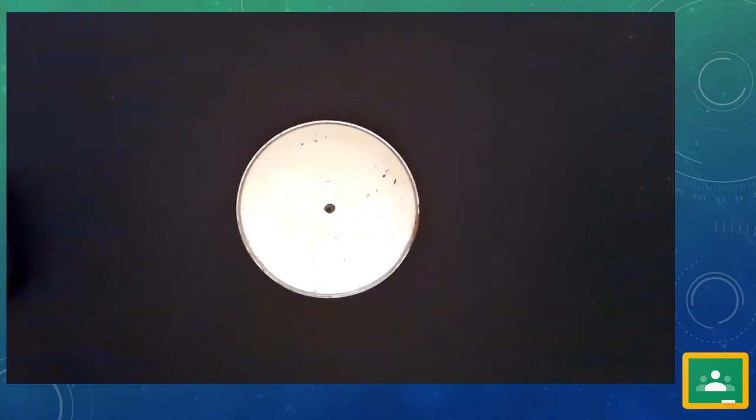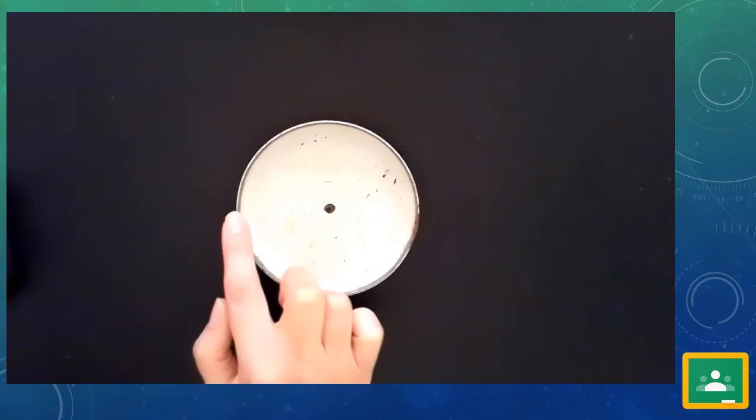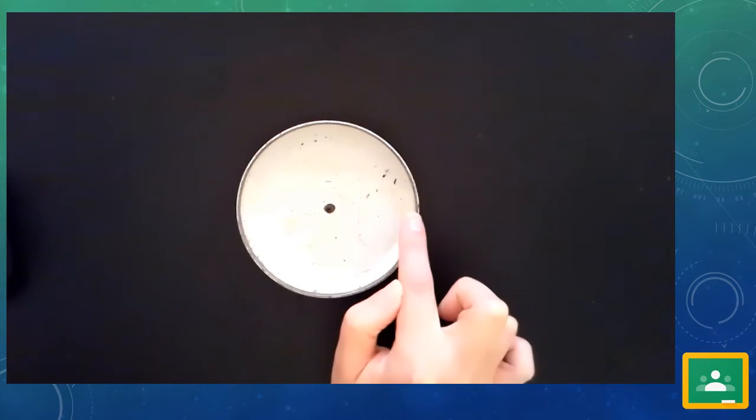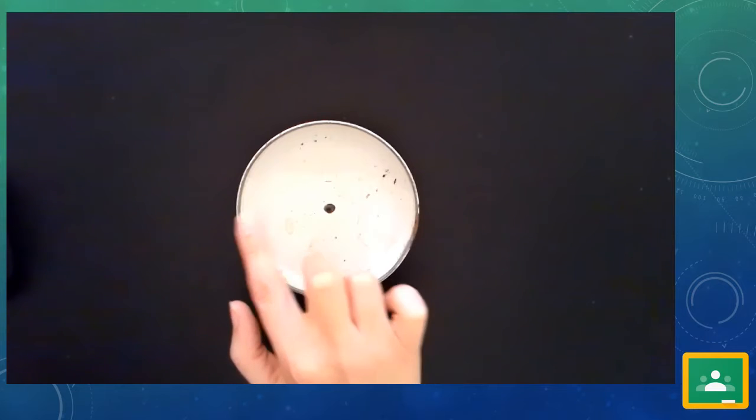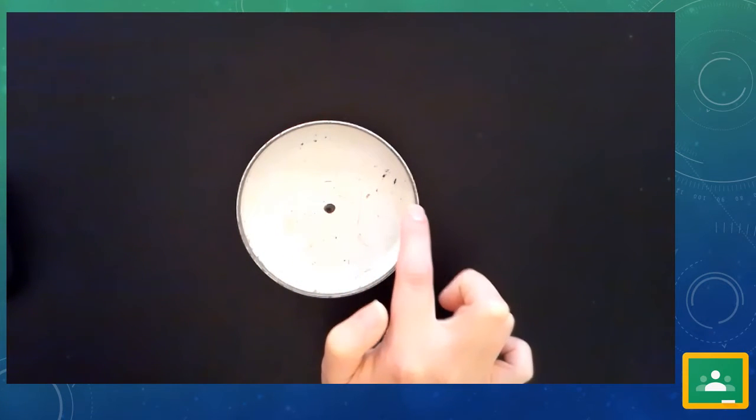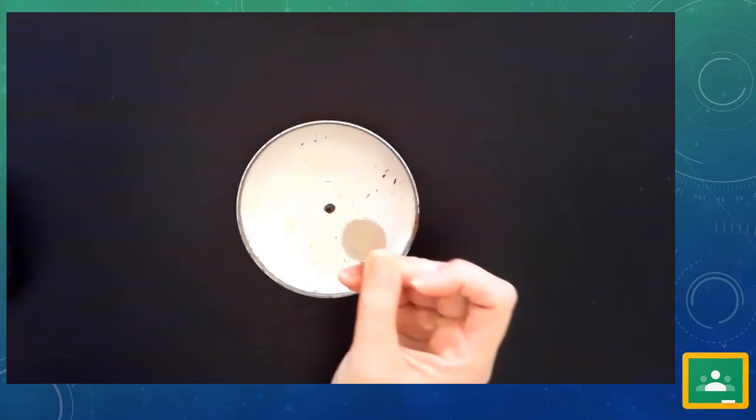All right, so before we dive deeper into our learning target today, we do need to talk about the word diameter. In that previous slide, during your pause and think, you saw an image of diameter. You saw a circle and you saw a dot in the center of the circle. And then you saw a line that went from one side of the circle through the center of the circle to the other side. That red line that you saw is diameter. Diameter measures one side of the circle through the center to the other side. And this is why we need to understand diameter today.